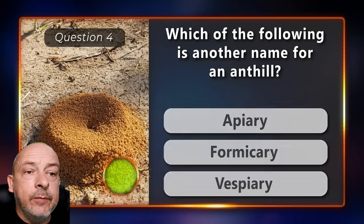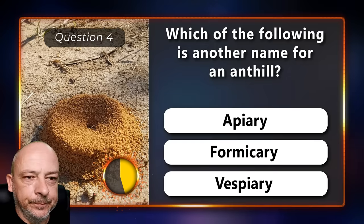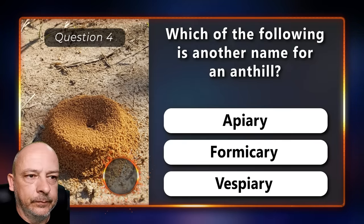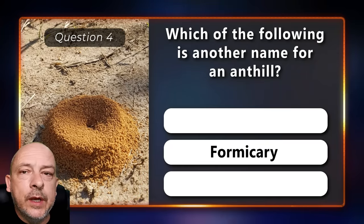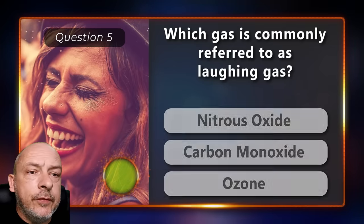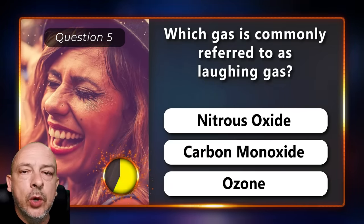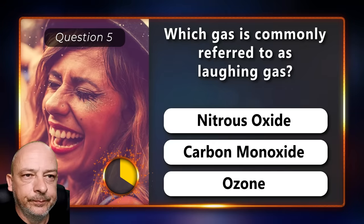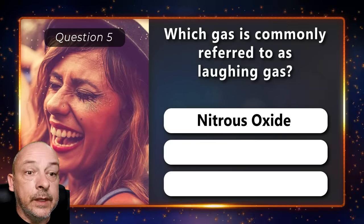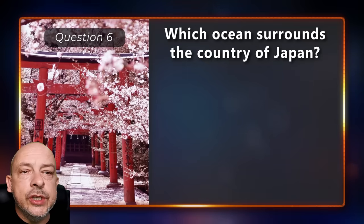Which of the following is another name for an anthill — an apiary, a formicary, or a vespiary? The answer is formicary. Which gas is commonly referred to as laughing gas — nitrous oxide, carbon monoxide, or ozone? Nitrous oxide.